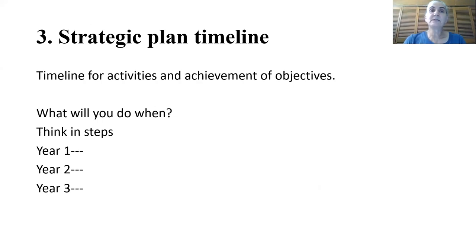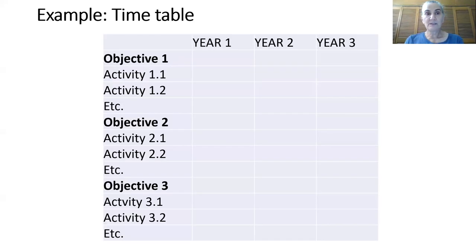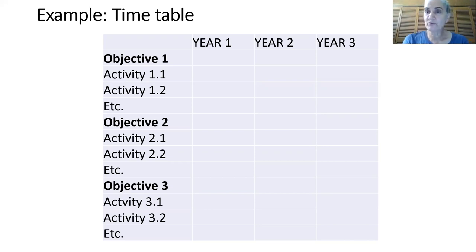The next thing is the plan timeline. This is how you lay out the activities over the years to meet those objectives — what you will do and when. You need to think in steps for some activities: one year you do one part, the next part another year, and then the last piece after that. The strategic plan table could be divided into years, half years, or quarters — whatever works for you — and then state by your objectives. For each activity, you might have a different component to be carried out in each year.